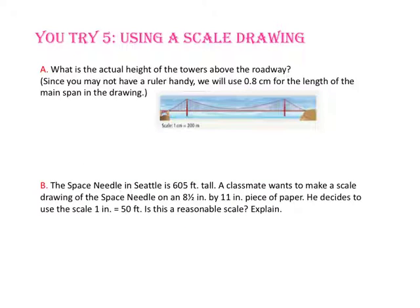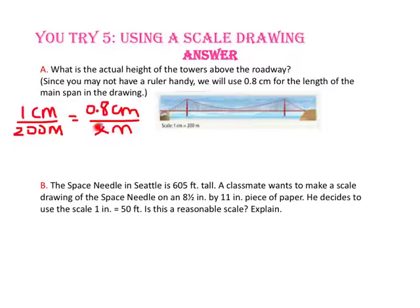Pause the video and do you try number 5. For part A, what is the actual height of the towers above the roadway? We are going to use 0.8 centimeters for the length of the towers above the roadway in our drawing. We'll start with the ratio 1 centimeter to 200 meters and we'll set that equal to 0.8 centimeters to x meters. Use cross product property and 1 centimeter times x will equal 200 meters times 0.8 centimeters. So the height of the towers above the roadway is 160 meters.